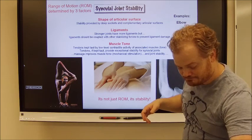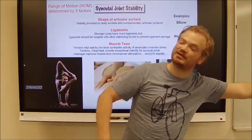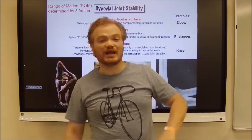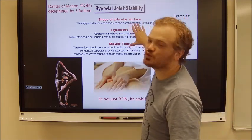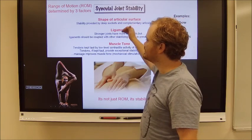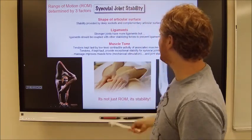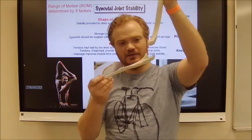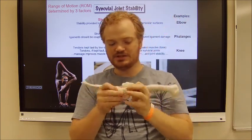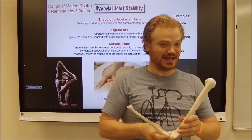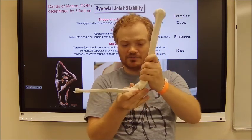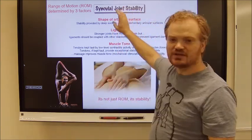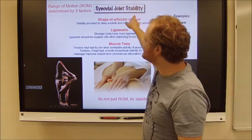Joint stability and range of motion go hand in hand. The more stable a joint is, the less range of motion you have. The more range of motion you have, the less stable a joint is. Three things determine this: the shape of the articulating surface, the number and strength of the ligaments involved, and muscle tone. Here I've got a humerus and an ulna — the way these articulate, that is a deep concavity that the humerus fits into, so this joint is really stable. How many times have you ever heard of somebody dislocating their elbow? It doesn't happen very often because this joint is so stable. So the deeper the concavity, the stronger and more stable the joint, but the less range of motion.